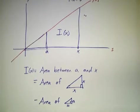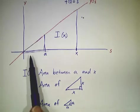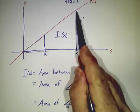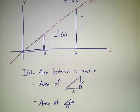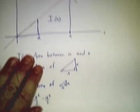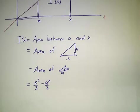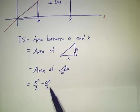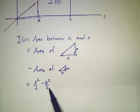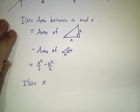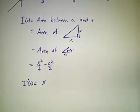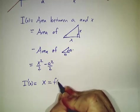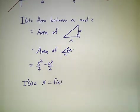So what's the area of the big triangle? Well, 1 half base times height. The base is x, the height is x. So the area of the big triangle is x squared over 2. The area of the little triangle, base is a, height is a, 1 half base times height is a squared over 2. So I(x) is x squared over 2 minus a squared over 2. What's the derivative of that? x. So sure enough, in this example, it works.